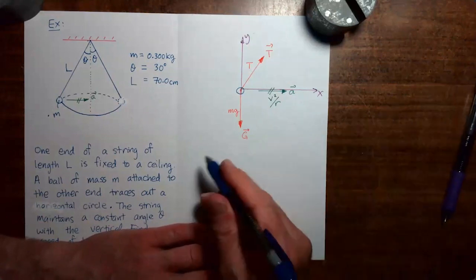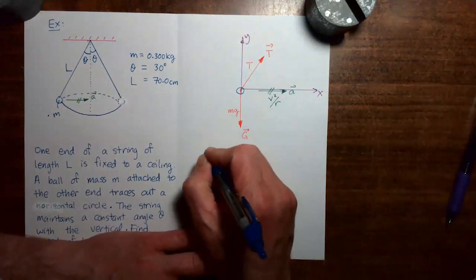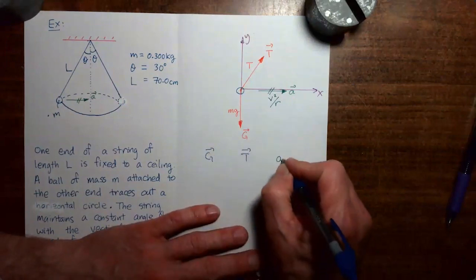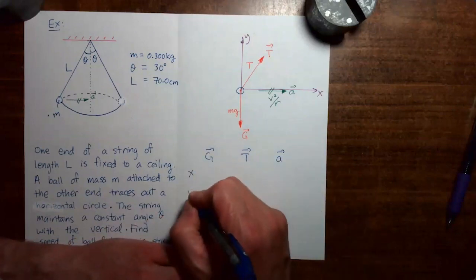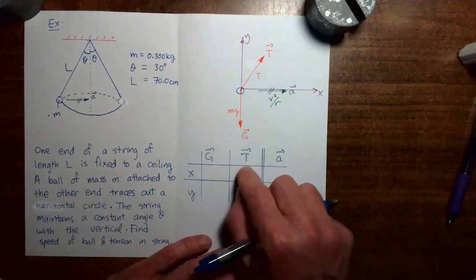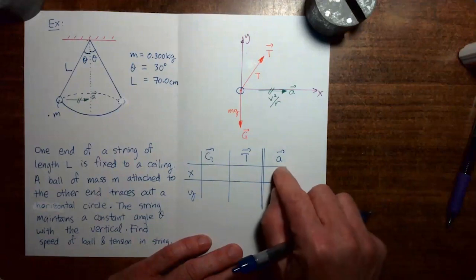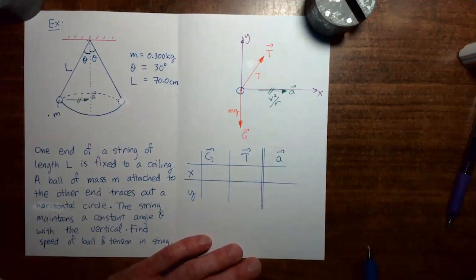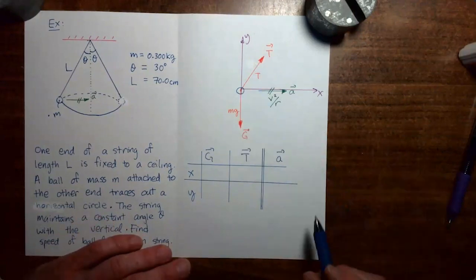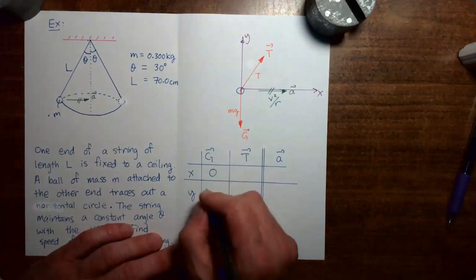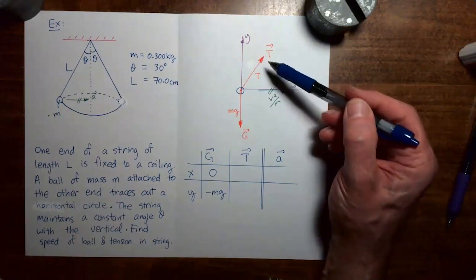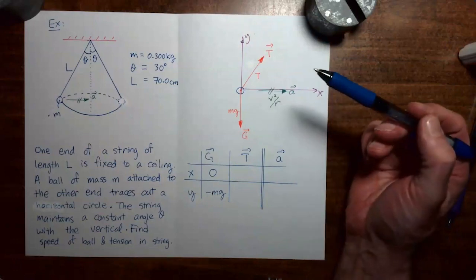Now I make my grid. We have the gravitational force vector, the tension vector, and the acceleration vector — and we're going to need both x and y components. Remember that we put a double line between the acceleration vector and the force vectors so we don't get them mixed up. Taking components now: the gravitational force vector points in the minus y direction, so the x component is zero and the y component is minus mg. To take components of the tension force vector, we need an angle between the tension force vector and one of the axes.